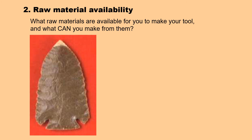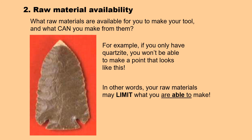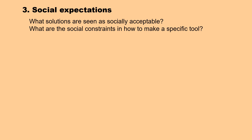The second problem that the maker solves involves the raw material. What raw materials do you have for making your tool, and what can you make from them? For example, if you have only quartzite, you won't be able to make a point that looks like this. In other words, your raw materials may limit what you are able to make.